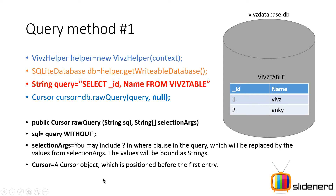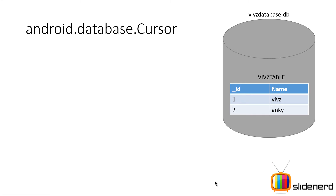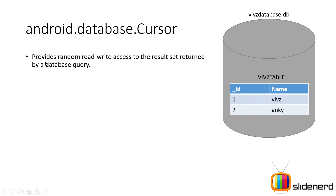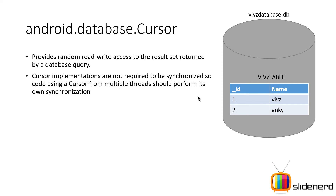Let's talk about the cursor object, which is positioned before the first entry. The cursor represents a kind of control that lets you move from the top to the bottom of your result set — the results you have obtained. Cursor provides read-write access to the result set returned by the database query. When you execute a query, you get either an entire column or a subset of the entire table. Those rows and columns together make a result set, and your cursor lets you navigate it from top to bottom or bottom to top. Note that cursor is not synchronized, so be careful when using multiple threads to access it simultaneously.